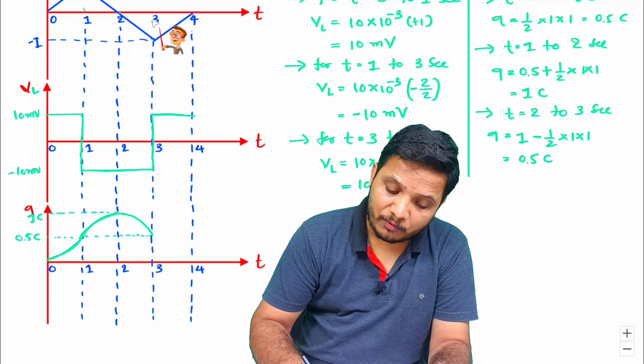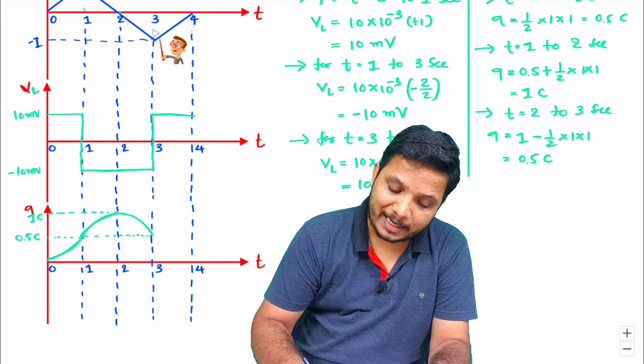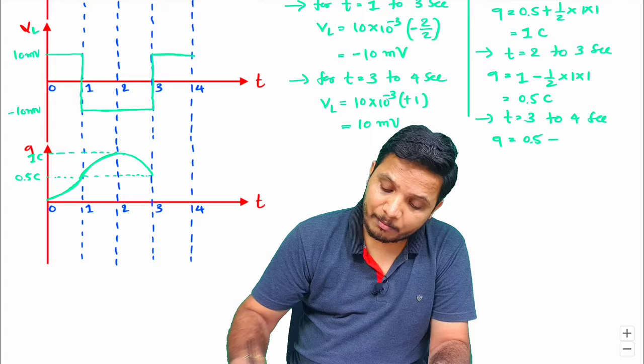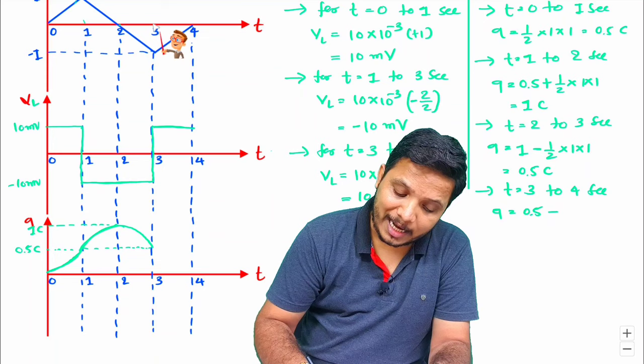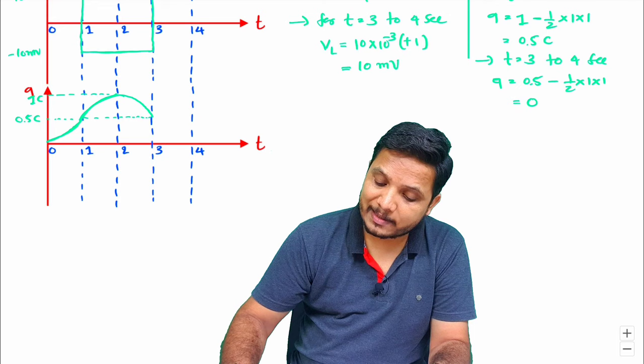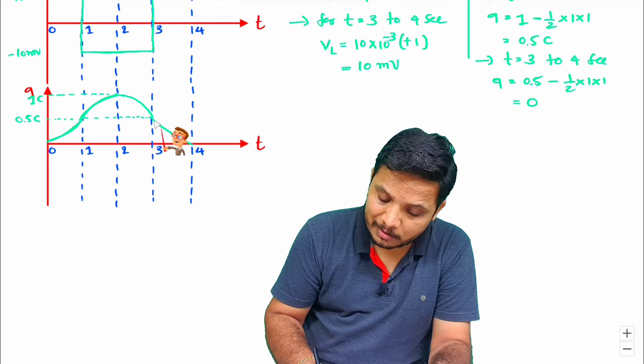From 3 to 4 seconds, the intercepted area is again below the time axis, so the charge is negative. Resultant charge = previous 0.5 C minus ½ × 1 × 1 = 0.5 C. So 0.5 − 0.5 = 0 Coulombs when it reaches 4 seconds.